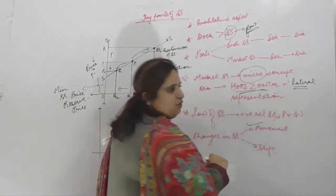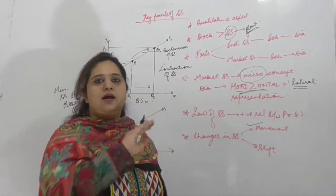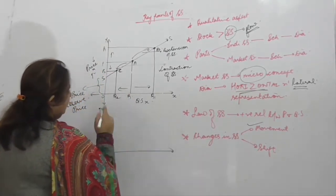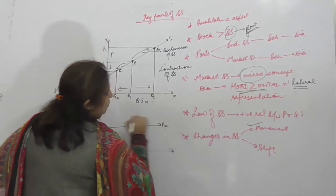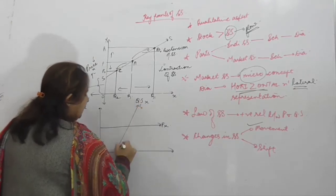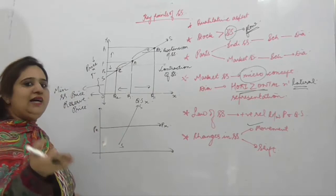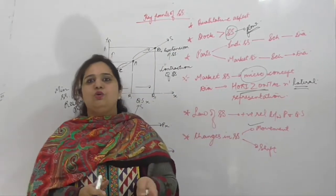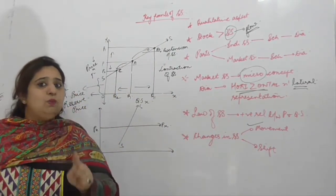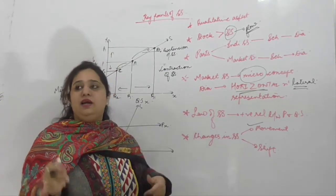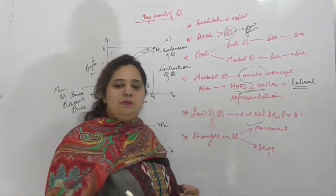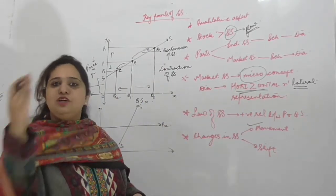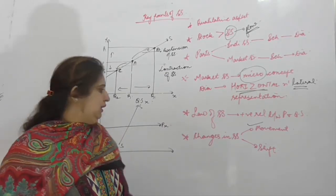Movement में quantity supplied का change होना due to the change in own price of a commodity — other factors constant। अब shifting देखेंगे। Shifting में own price of the commodity constant रहती है — original supply curve SS। Own price constant होते हुए भी supply curve rightward या leftward क्यों shift हुआ? क्योंकि बाकी सारे factors बदल रहे हैं other than the own price।